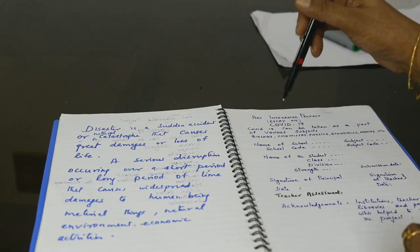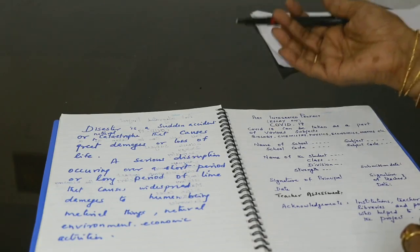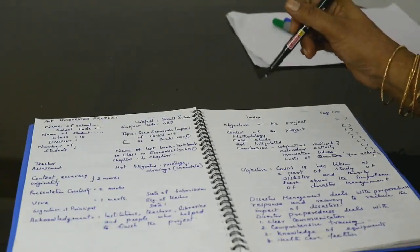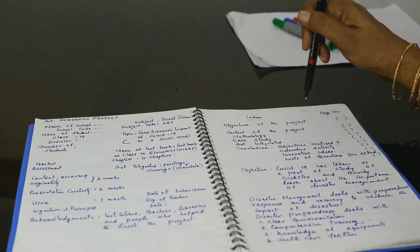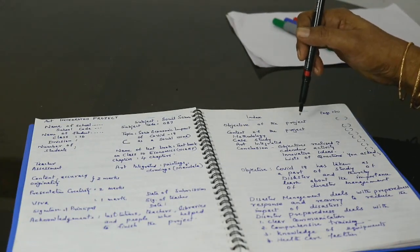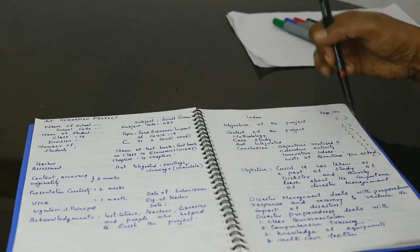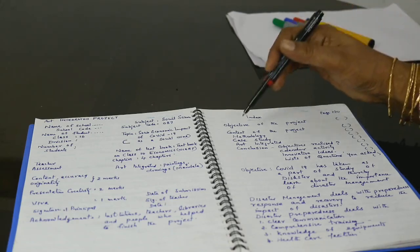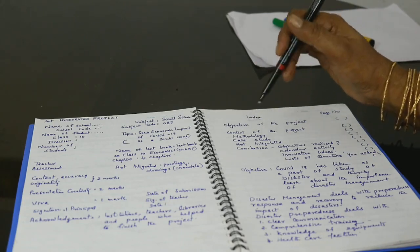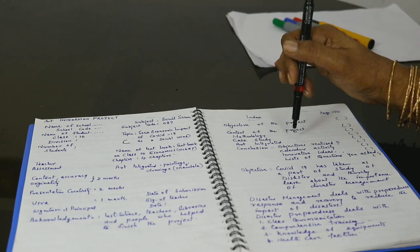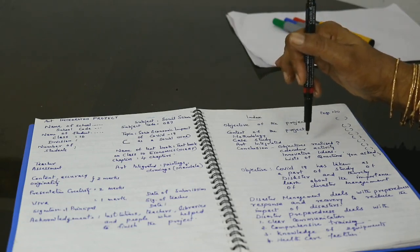Let us see how we can proceed to the project pages. I am giving a rough idea of the project. First of all, there should be an index and objectives of the project. There is page number should be written. What are the objectives of the project? Content of the project? Methodology of the project? Case study? Then what are art integrated? Then conclusion of the project?